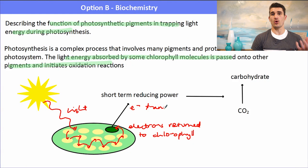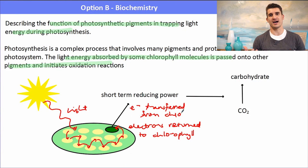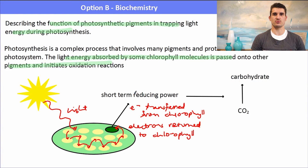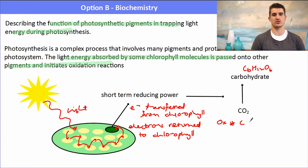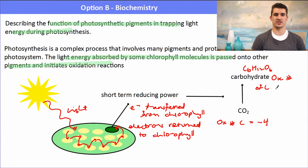Those electrons are put to use in the photosynthetic system to convert carbon dioxide to carbohydrates. This works because there is a difference in oxidation number between CO2 and the carbohydrates produced. Photosynthesis produces sugars — for instance glucose, C6H12O6 — from carbon dioxide. The oxidation number of carbon in CO2 is +4, and in glucose it is 0. We use that reducing power, those extra electrons, to reduce the carbon dioxide into sugar.